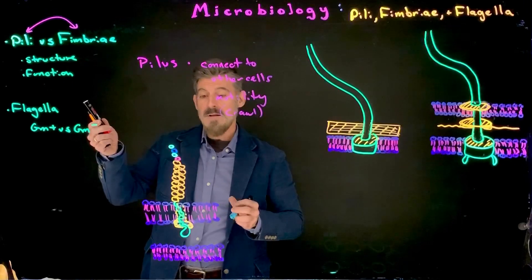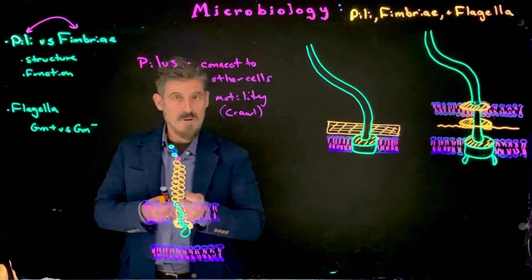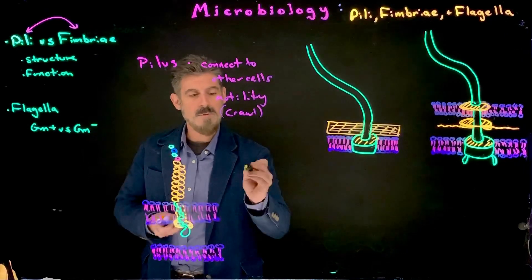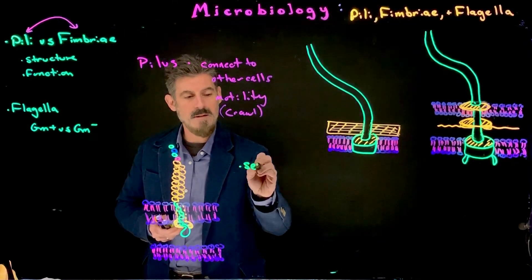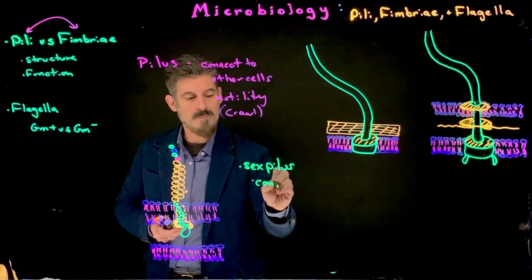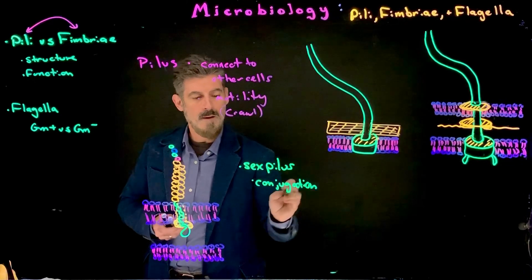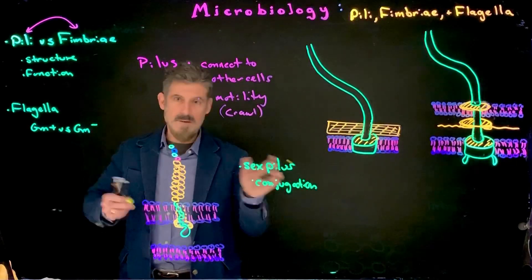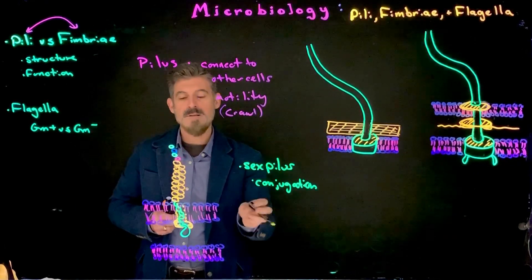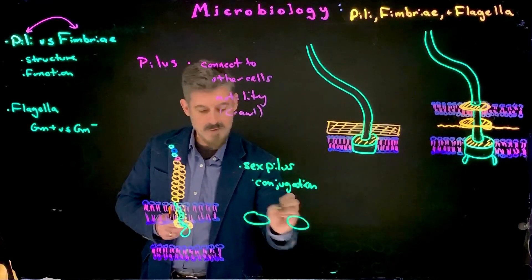So a pilus, often the term pilus is used often with a structure we call a sex pilus in bacteria. It's used for conjugation. So in that case, we'd never say fimbriae. It's always the pilus. So there's this one structure. There's one cell. There's another cell.